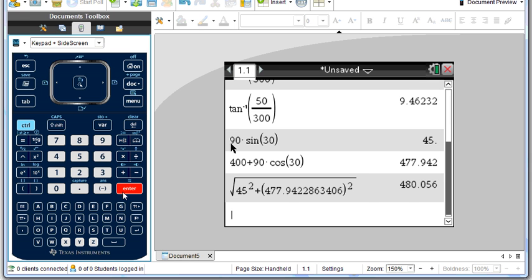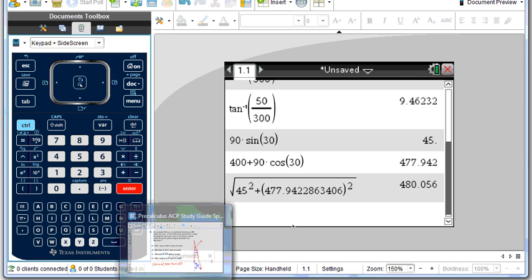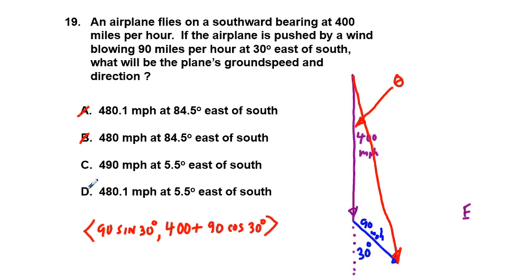And we get, for that, looks like 480.1. So going back to our answers, 480.1 miles per hour. D is looking pretty good, and actually by our process of elimination, D is going to be it. It can be nothing else but D. So that's our answer.